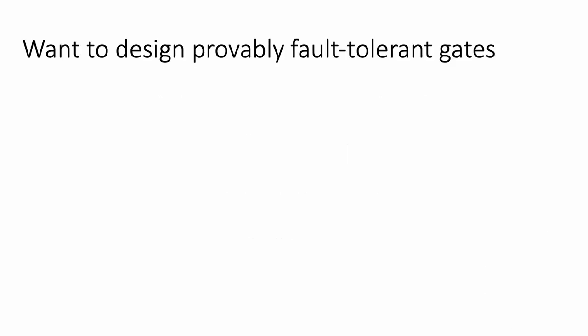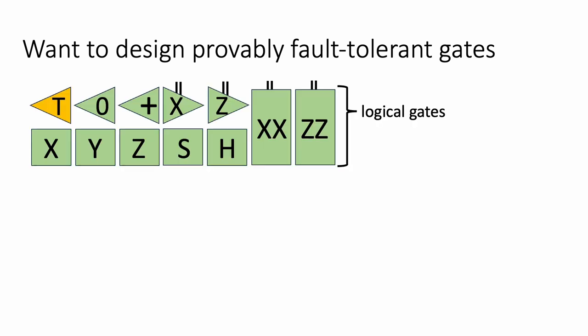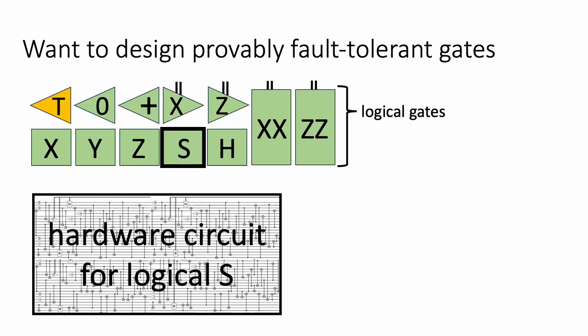A major goal of quantum error correction these days is to be able to design provably fault-tolerant gates in a variety of settings. We might have some hardware that we're allowed to apply operations to, and the operations could be faulty — they might go wrong. This is an illustration of a circuit where each wire represents a physical qubit and each component represents some physical operation you can perform on your hardware qubits. The overall effect of this circuit should be to implement some specific logical operation on information encoded in some quantum error correcting code.